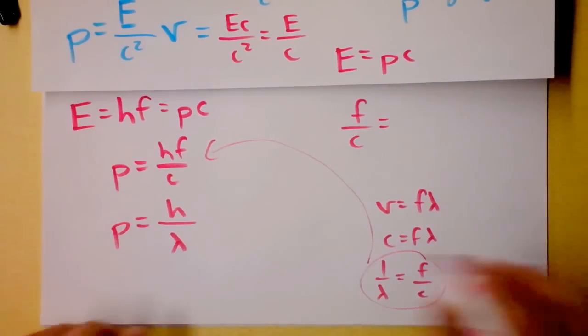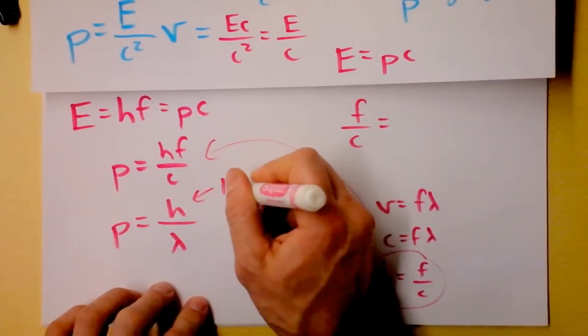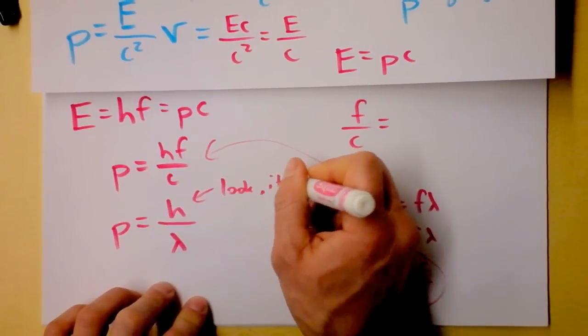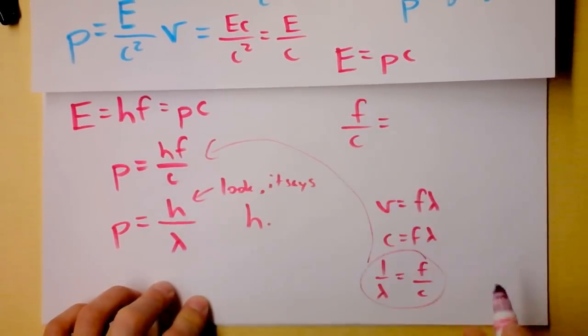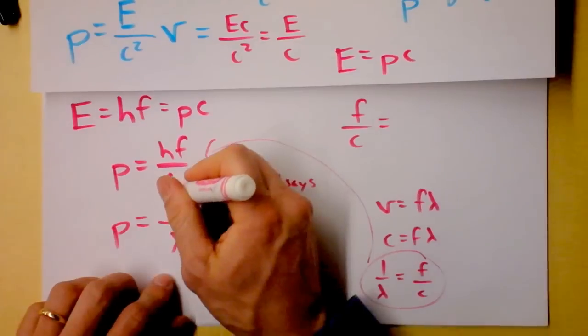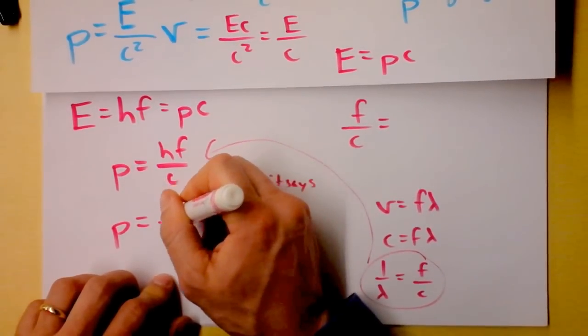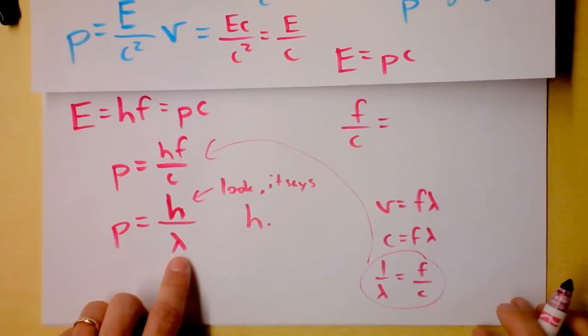Ooh. H-bar. Did I say H-bar? This is just an H. Look. It says H. Sorry. I was getting into the mode right there. This is Planck's constant. Please disregard what I previously said. We'll talk about it later.